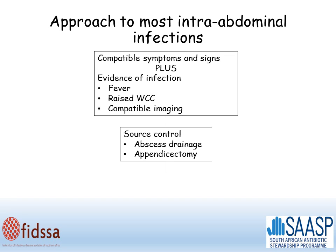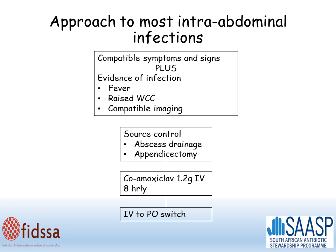Once source control is achieved, we can consider antibiotics. For community-acquired infections, co-amoxiclav, usually given intravenously, is an appropriate therapy. You should always consider a swift intravenous to oral switch when patients are able to swallow and absorb their therapy.